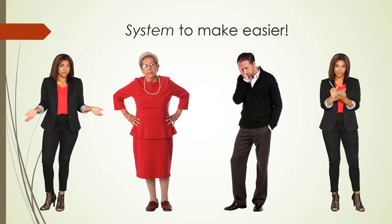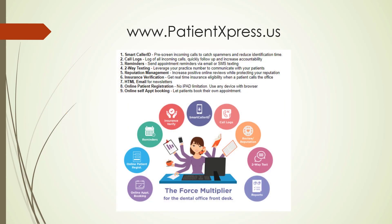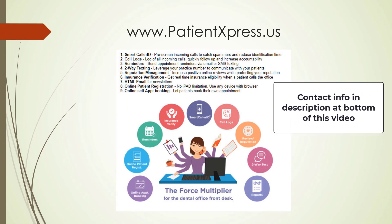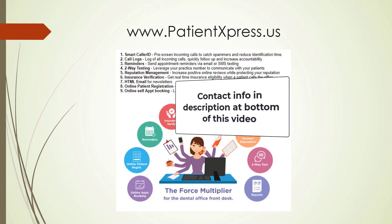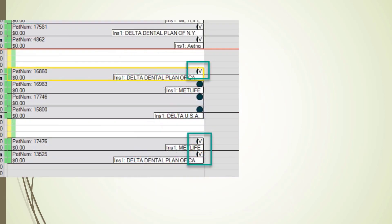So what I'm going to show you are some very easy, quick steps. You don't need to write them down because I'm going to list them for you at the end of this video. We're going to talk about an add-on product for Open Dental called Patient Express. This does a whole bunch of different things for you, but what we're going to concentrate on is the insurance verification. What Patient Express does is look in the appointment book one, two, three days ahead of time — whatever you like — and automatically check the eligibility for each one of those patients.